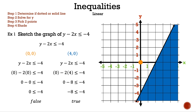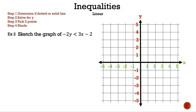Let's get rid of the points we used to sketch the line to avoid any closed or open circle mistakes. That is example 1. Let's move on to example 2. Now let's read the question: sketch the graph of negative 2y less than 3x minus 2.